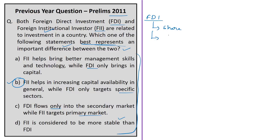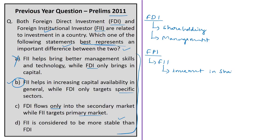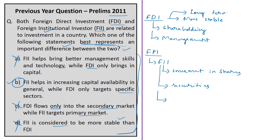Option D says FII is considered more stable than FDI — this is also incorrect, because FDI is more preferred over FPI as it is long-term and less fluctuating compared to the speculative, highly volatile, and unpredictable FII. Foreign Direct Investment usually takes a considerable stake in the company and exercises management influence, while Foreign Institutional Investors, a component of FPI, aim to reap profits by investing in shares and bonds without controlling the company. Therefore, option B is the right answer.